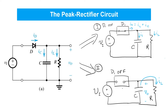And then it gets replenished. When this is working properly, essentially there's a nearly constant current flowing through the resistor R, periodically coming from the source VI, but the rest of the time just coming from the capacitor C. It sort of acts like a reservoir of charge in between the peaks of the waveform VI.